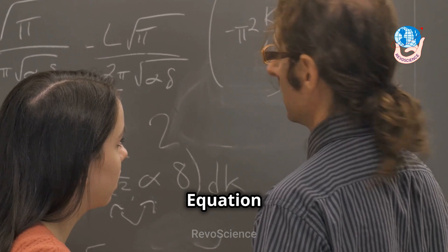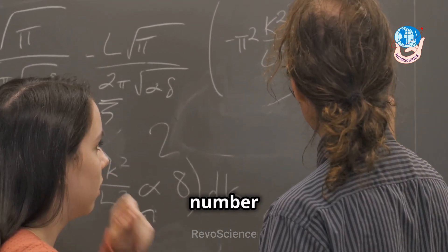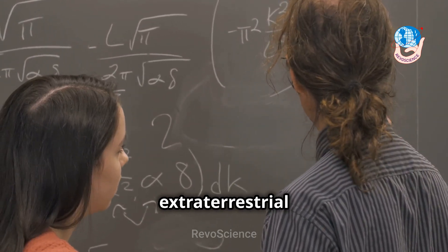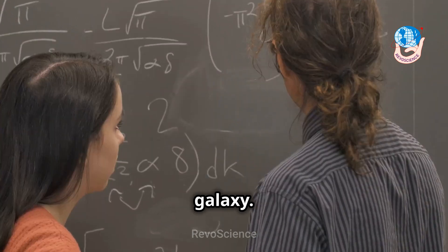The Drake equation is a formula that estimates the number of active, communicative, extraterrestrial civilizations in our galaxy.